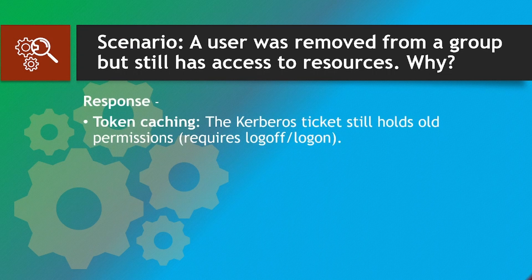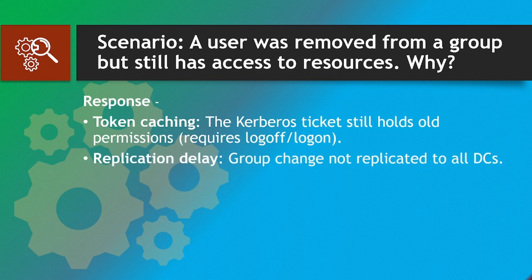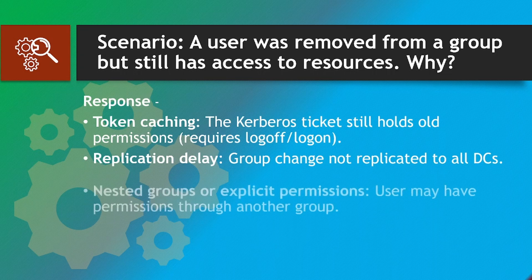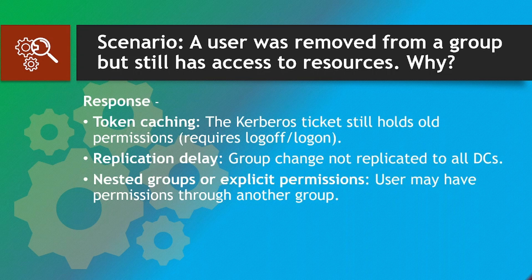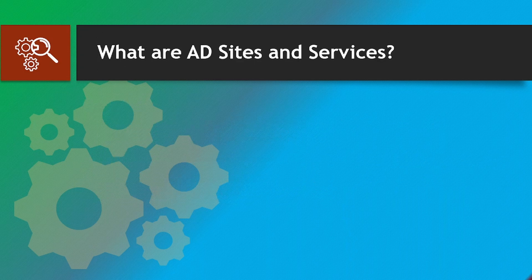Scenario: A user was removed from a group but still has access to resources — why? Response: Token caching — the Kerberos ticket still holds old permissions and requires a re-logon. Also possible: replication delay where the group change has not replicated to all DCs, or the user may have permissions through another nested group or explicit permissions.